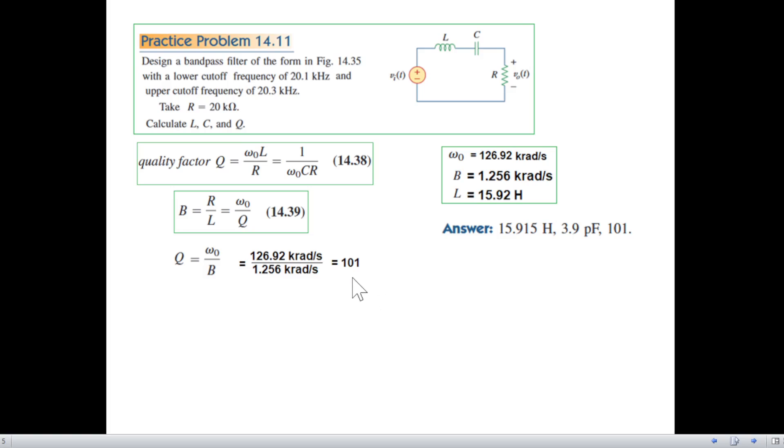Now Q is a ratio, it does not have a unit. It just shows the quality of the filter or quality of the selectivity of the filter. Next for C we can use this formula: 1 over omega naught QR.